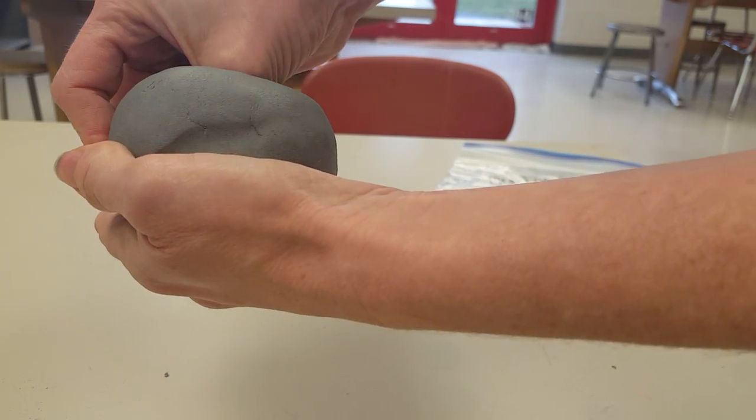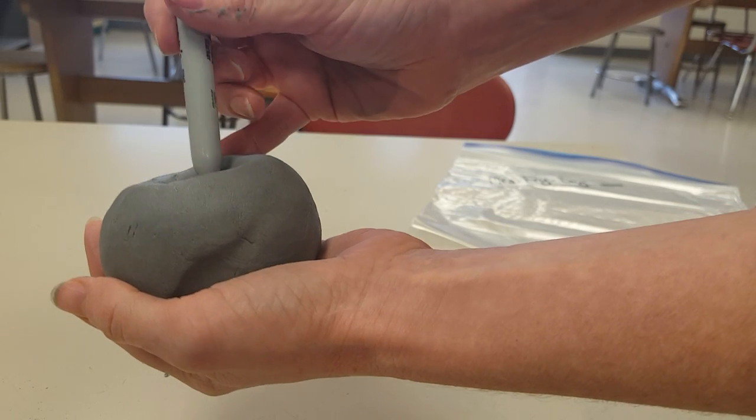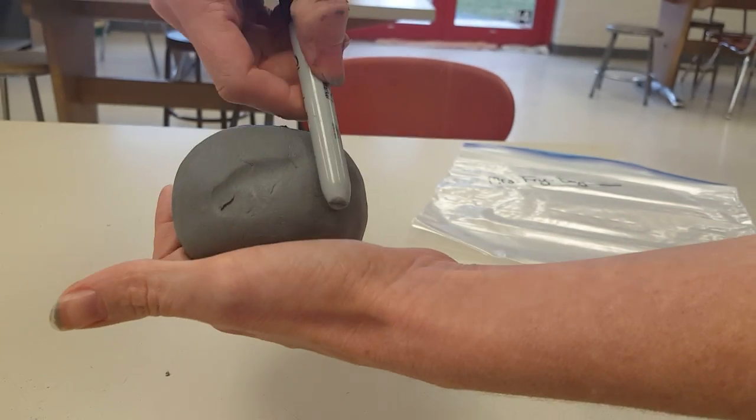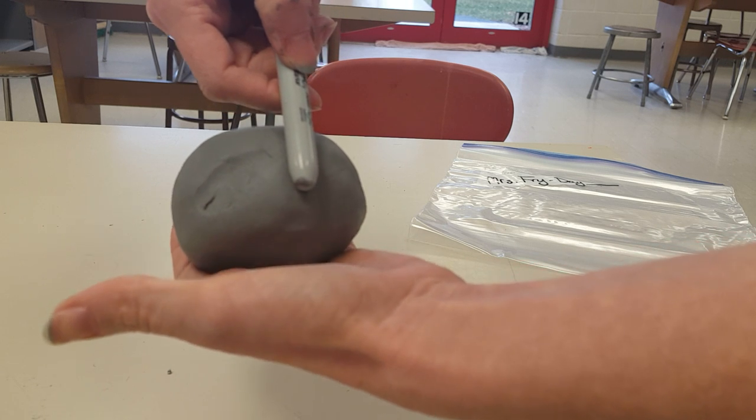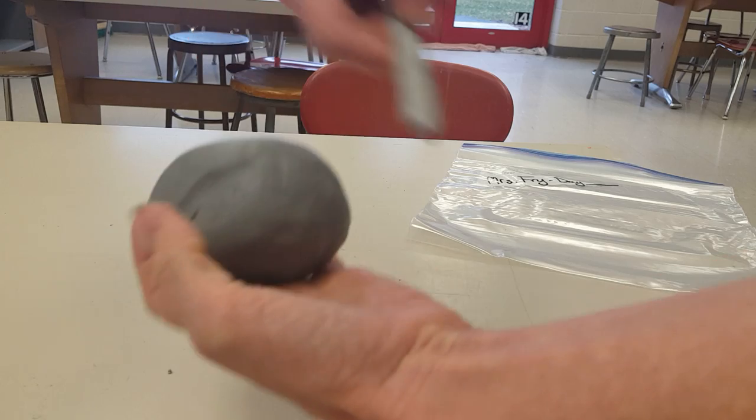You're going to push your thumb down into your clay. You don't want to go the entire way through, and if you'd like, you can use a pencil or in this case I'm using the sharpie to see how deep you've made your indentation. That looks pretty good. I want about a half an inch at the bottom here, which is what I have.